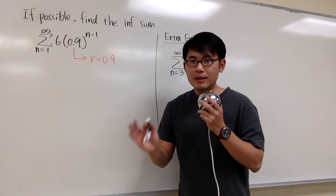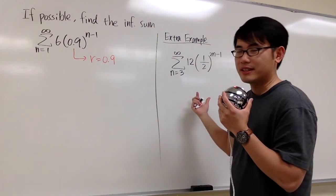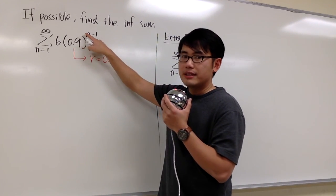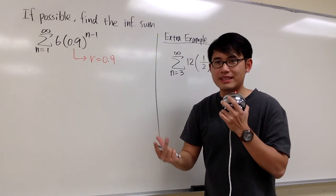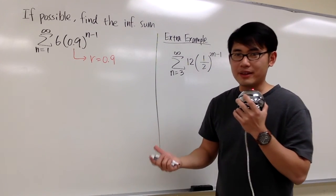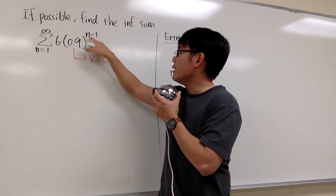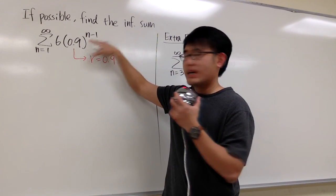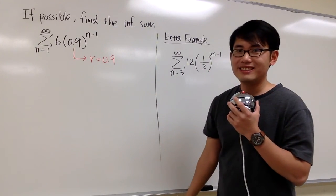I will demonstrate the idea of under what situation things will change in the next example. If you have 2n or 3n in the exponent instead, then it will change — we have to play around with the exponent first in order to pick out the common ratio. But in this case, if you just have n, you can have plus 1 or minus 5 or whatever; the common ratio will just be the base. That's guaranteed.